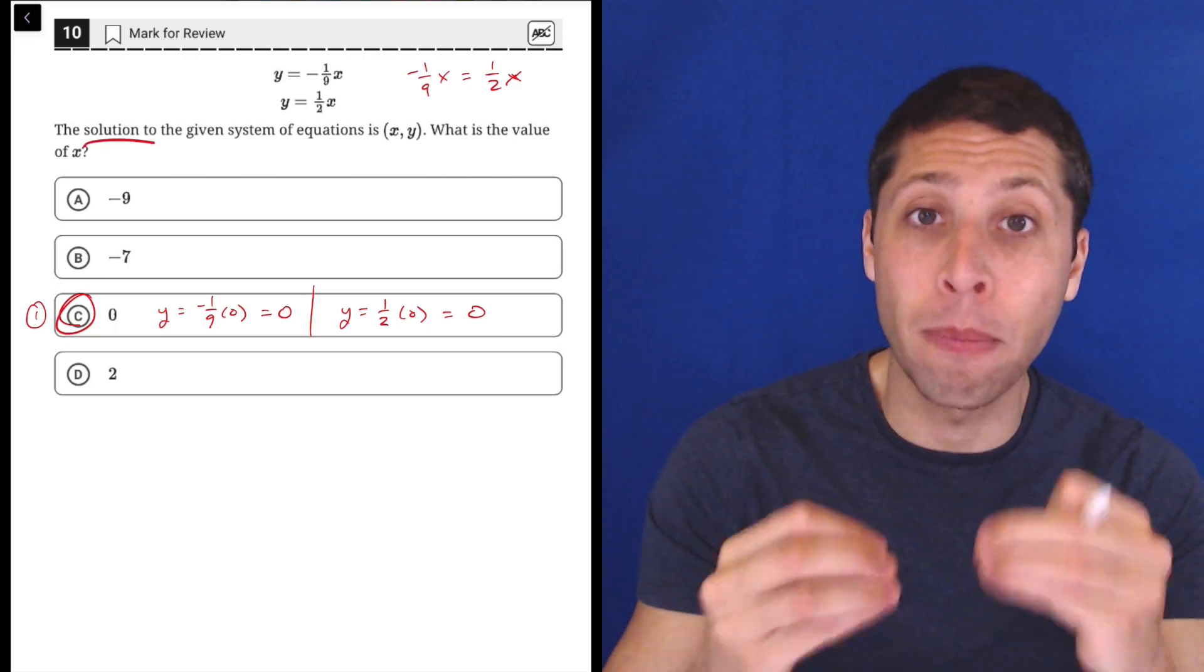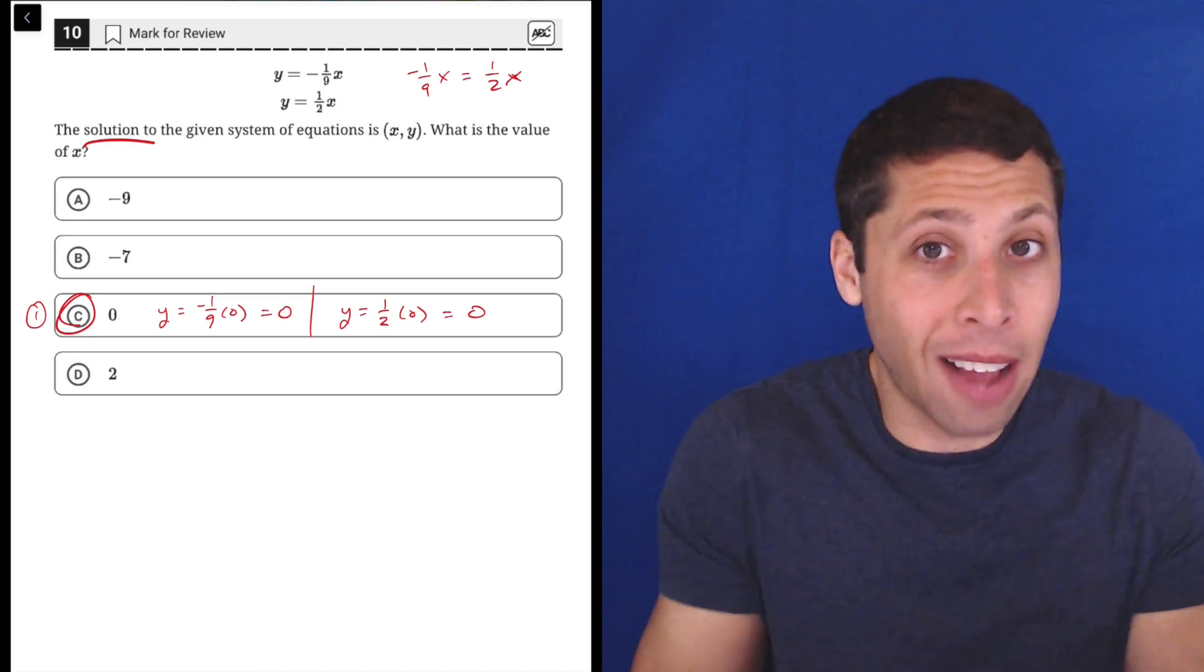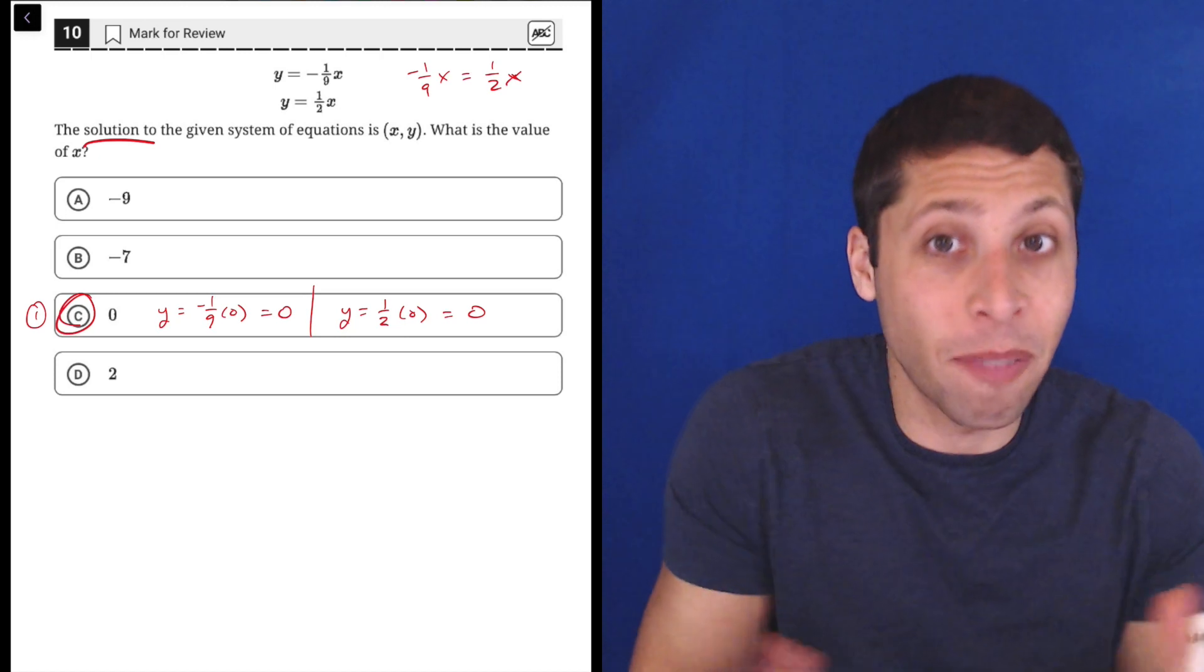It's a point that lies on both lines, where both equations intersect. That's it, I'd be done with this question. I wouldn't need to check any other choice because I've proven this one correct.